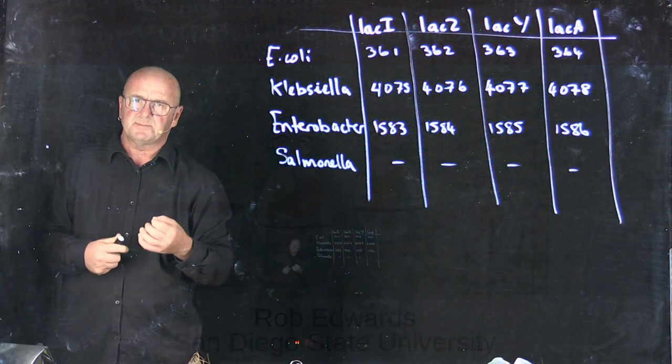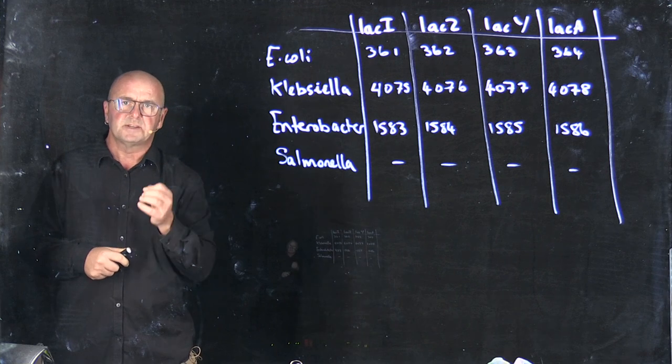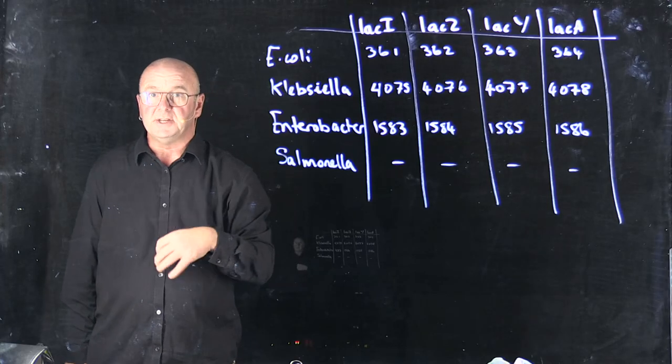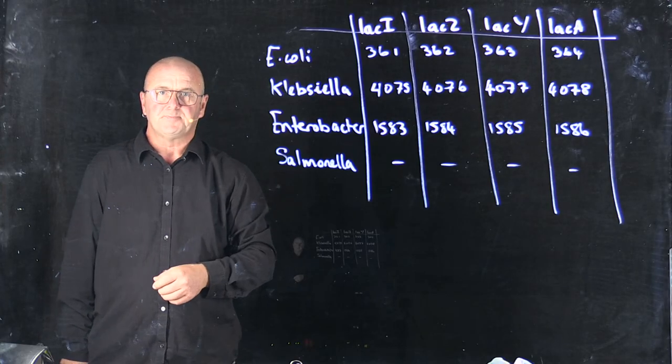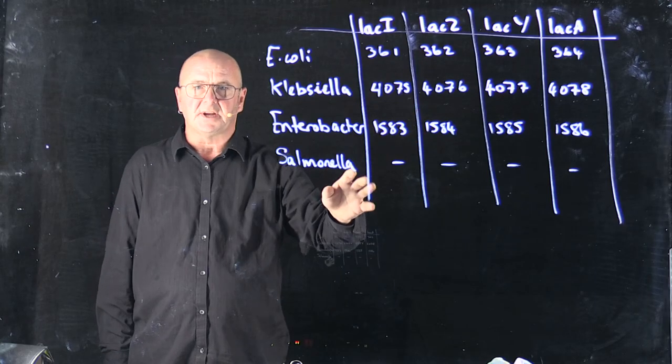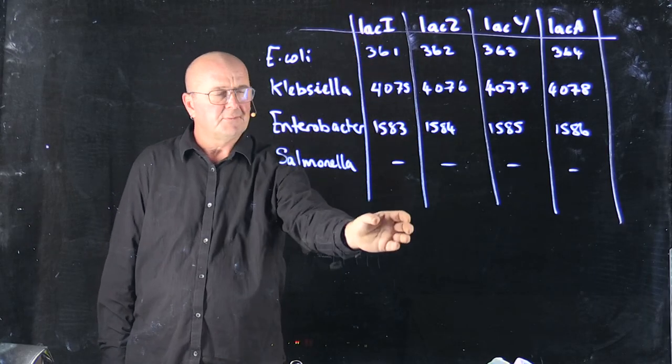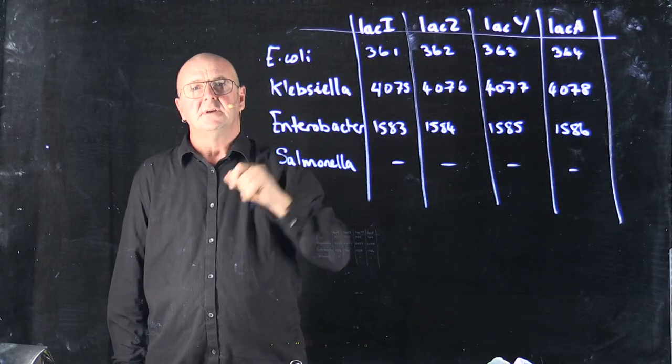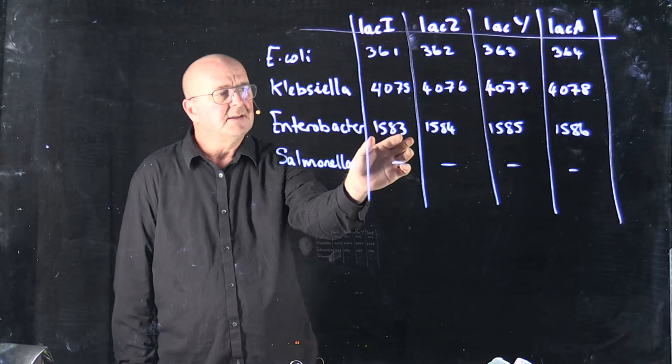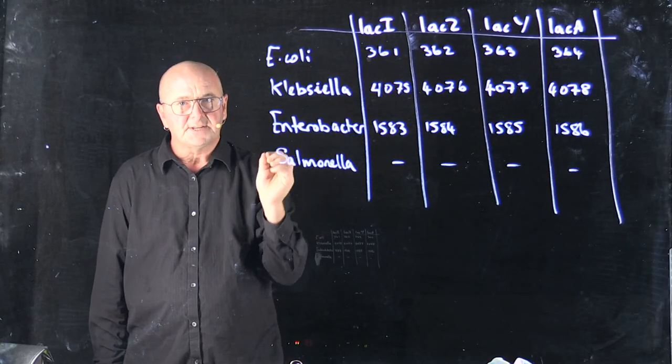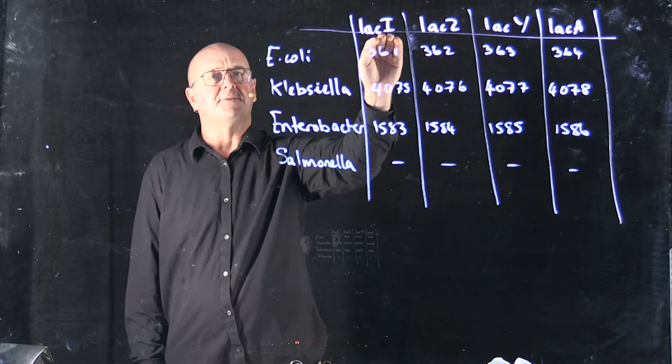So how can we use the subsystems to develop techniques to quickly annotate either genomes or metagenomes? You'll recall that our subsystem is basically a spreadsheet where we have the columns, which are the proteins, and the rows are the genomes where those proteins occur, and the individual cells are the proteins within the genome that are performing those roles.